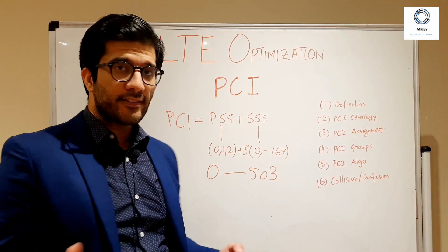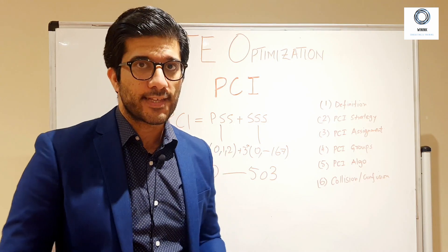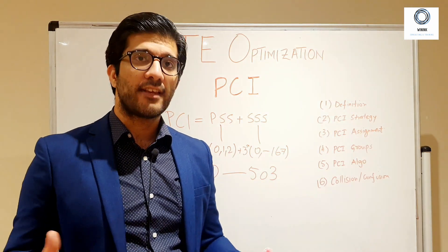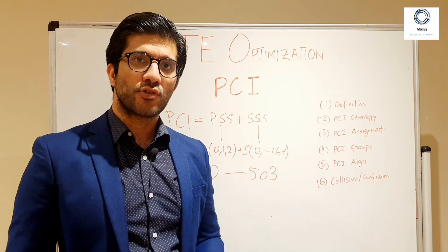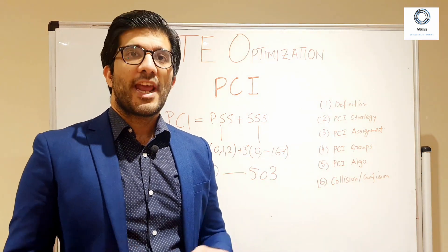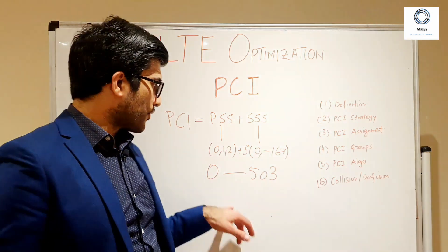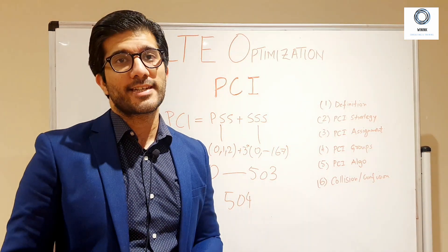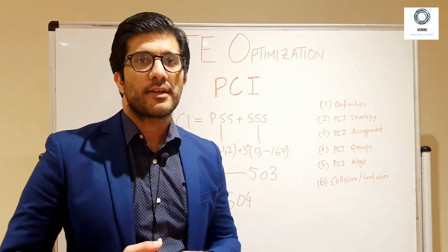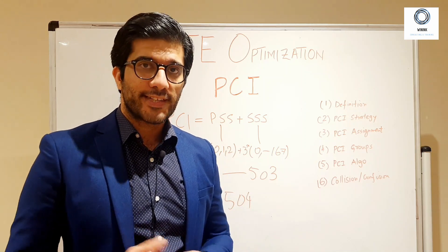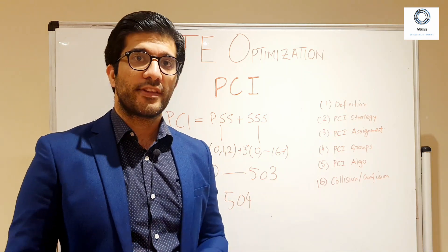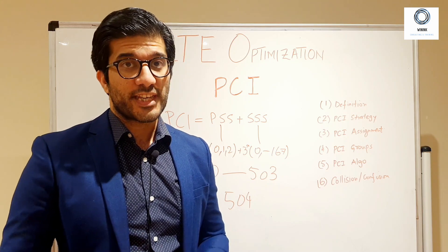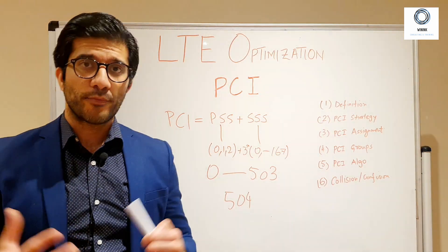In actual terms, your PCI can be any value between 0 and 503, and there are a total of 504 Physical Cell IDs in LTE. So if you are planning any LTE network that has thousands of sectors and cells, you will have to reuse your PCI across your entire network. This is where a situation can occur where some sectors that are adjacent to each other or located in the same cell might end up having the same PCI, causing severe network issues.